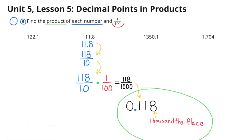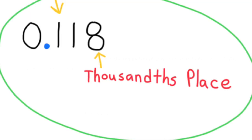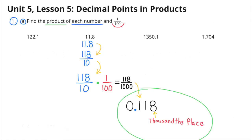Eleven and eight-tenths times one-hundredth. Eleven and eight-tenths can be rewritten as one hundred eighteen-tenths. So the multiplication problem is one hundred eighteen-tenths times one-hundredth, which equals one hundred eighteen-thousandths. This number ends in the thousandths place, so the eight is in the thousandths place and the decimal goes between the ones place and the tenths place. The final product is one hundred eighteen-thousandths.